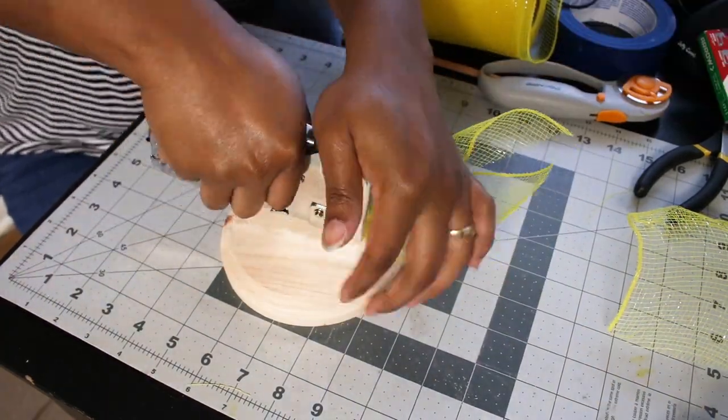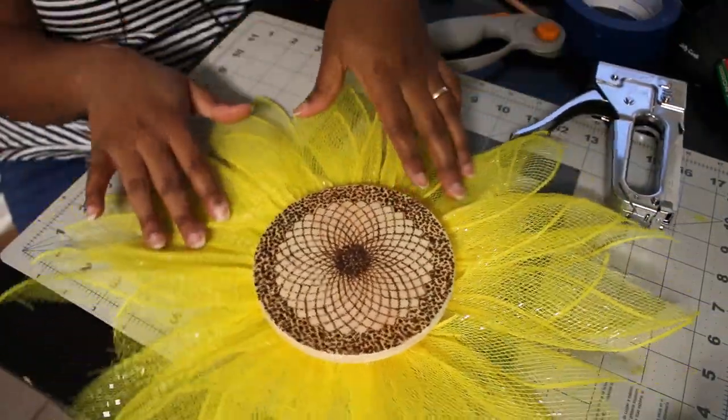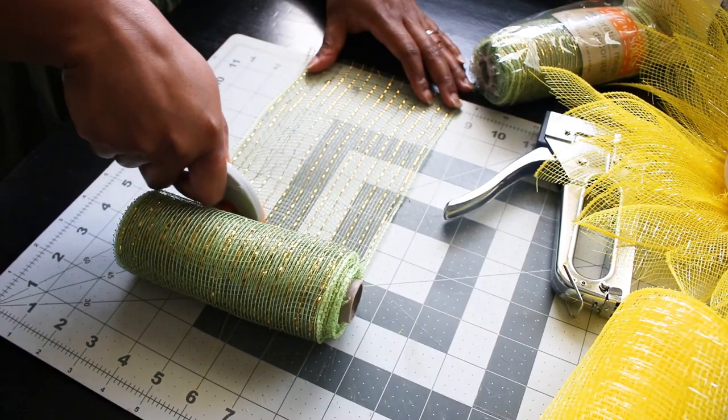And to secure it onto the wood round, I used my staple gun. Now, here it is with all the yellow petals, but I wanted to give a little more depth and interest to this piece.